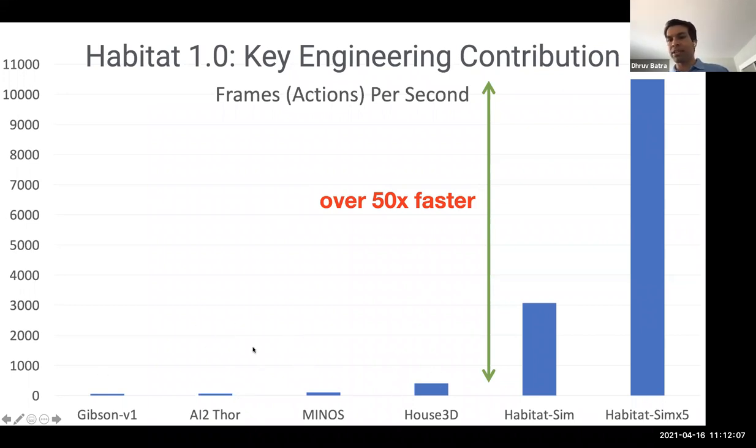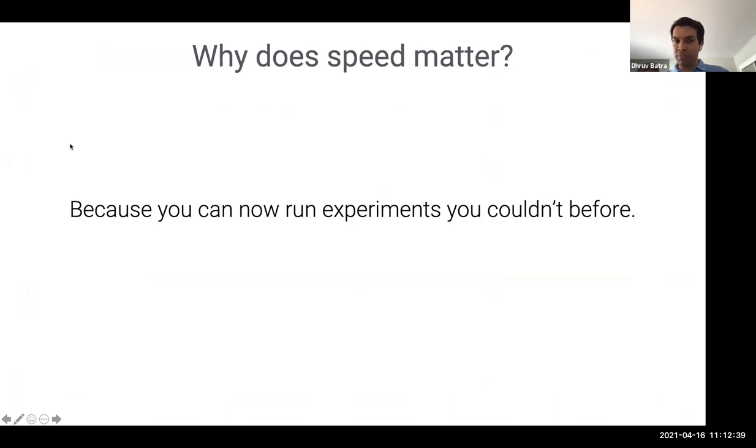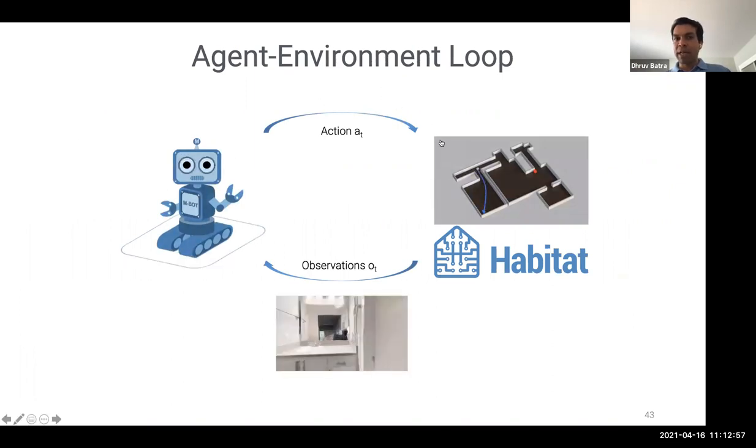And so the sort of key engineering contribution of Habitat is that it's over 50x faster than anything else on the market. These are a few different comparisons of simulators that existed in the last couple of years. A single instance of Habitat runs at a few thousand frames per second. And because we own the simulation stack on a single GPU, we can pack in multiple instances and get over 10,000 frames per second. And it directly translates to training speeds.